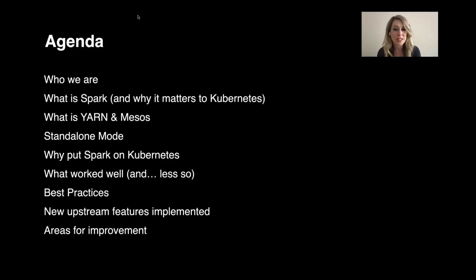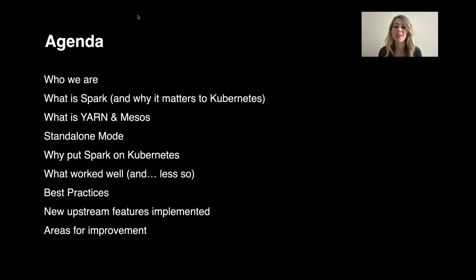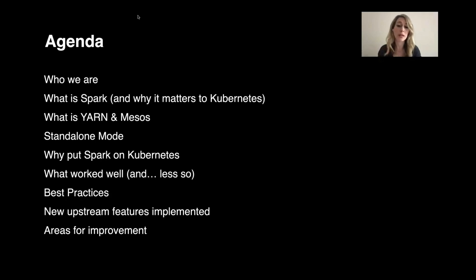So first and foremost, we're going to tell you a little bit about ourselves. Then we're going to talk about what is Apache Spark and why it matters to Kubernetes, what is YARN and Mesos, Spark standalone mode, why you should put Spark on Kubernetes, what worked well while we worked through this process and what didn't work as good, best practices for doing this kind of transformation, new features that have been implemented and upstreamed, and areas for improvement.